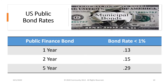The low savings rate applies to the public bond market as well. Looking at 1-year, 2-year, and 5-year bond rates on average, they're less than 1% — a 1-year bond at 0.13%, a 2-year at 0.15%, and a 5-year at 0.29%. These rates are really disgraceful. How can you save when the interest rates on these products are less than what you would pay in inflation?